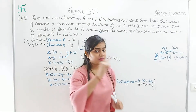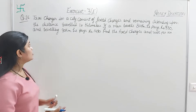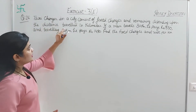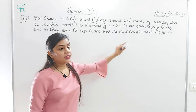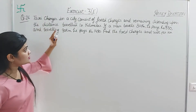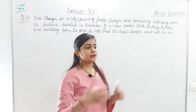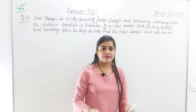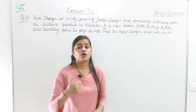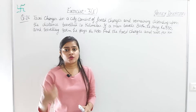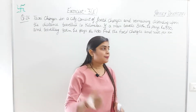Now let's solve question number 26. Taxi charges in a city consist of a fixed charge and a remaining charge depending upon the distance traveled in kilometers. Any taxi travel has a fixed charge plus a per-kilometer charge. Let x be the fixed charge and y be the per-kilometer charge.